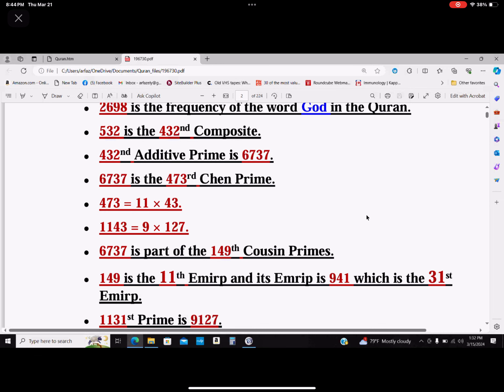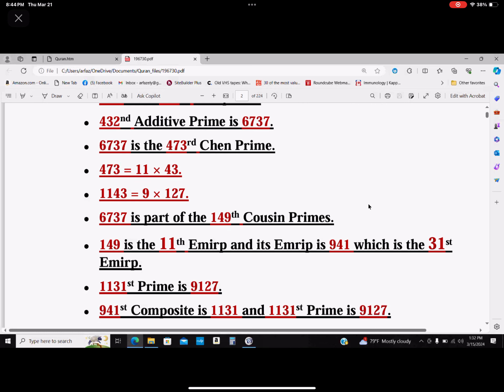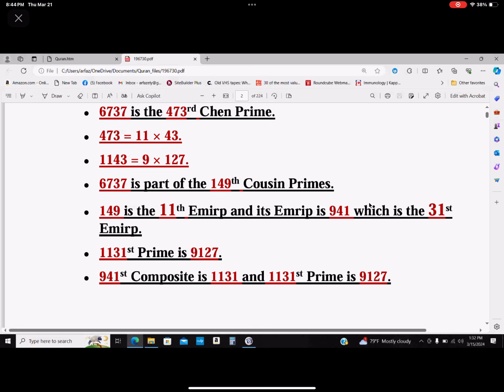The 149th happens to be the 11th emirp, and this emirp is 941, which is the 31st emirp. So we are back to 1131. You see that 1131? The 1131st prime is 9127. But also, I didn't choose 941 just for the heck of it. The 941st composite happens to be 1131, and the 1131st prime is 9127.